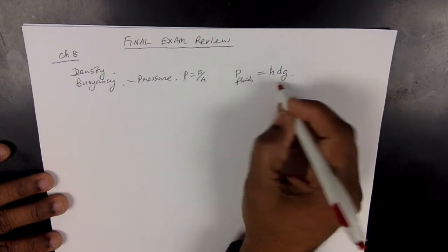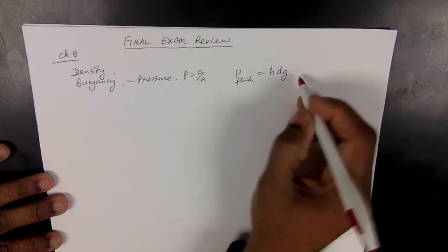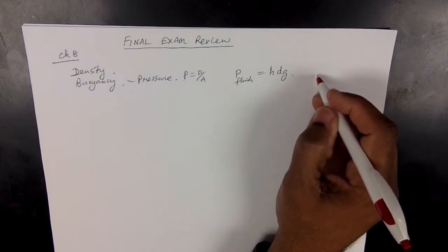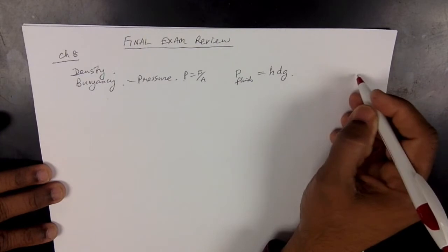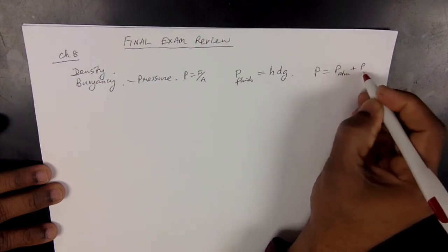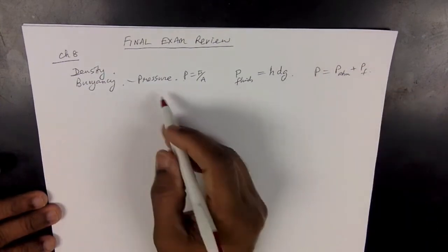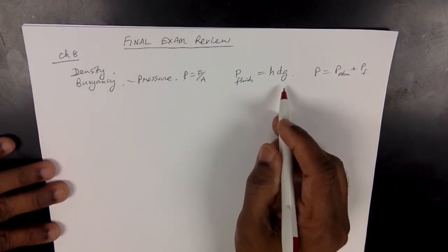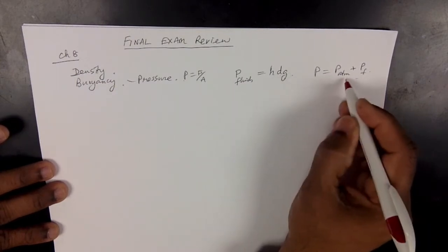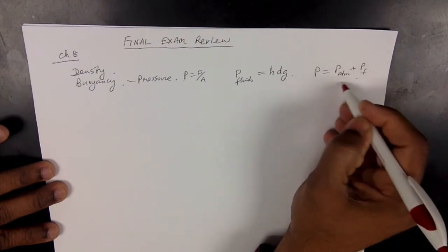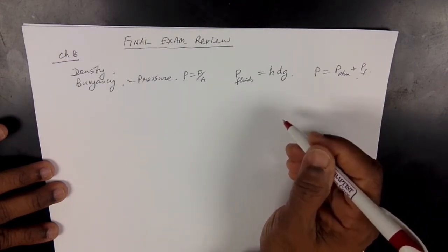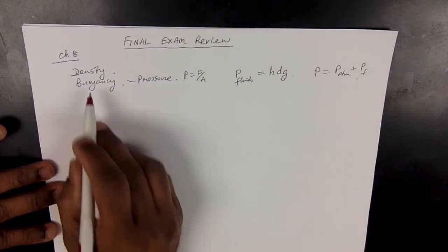The equation HDG gives pressure by fluids alone, but the absolute pressure is going to be atmospheric pressure plus the pressure in fluids. So the absolute pressure equals atmospheric pressure plus the pressure of the fluid. You should have a clear concept of pressure. Atmospheric pressure is measured with a barometer — a barometer is used to measure atmospheric pressure.